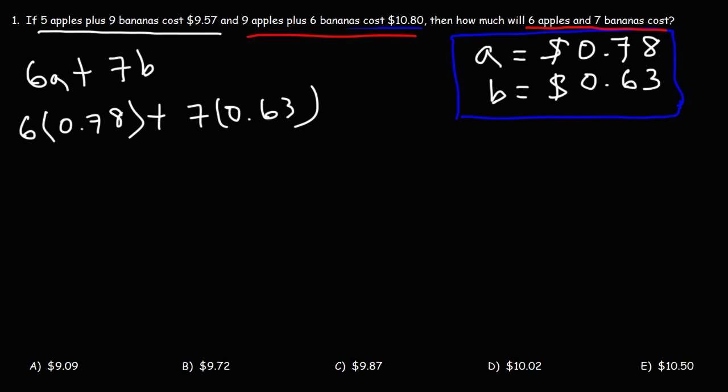So 6 times 78 cents, that's $4.68. And then 7 times 63 cents is $4.41. So now adding 4.68 plus 4.41, this gives us $9.09. So that is the cost of 6 apples and 7 bananas based on the information that was given to us.